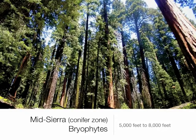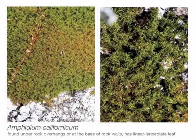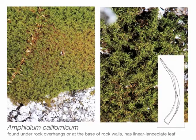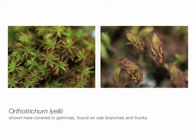Now climbing in elevation to the conifer zone, approximately 5,000 to 8,000 feet. There is no sharp delineation between zones, and this first species is a perfect example as it is also found in the foothills. Amphidium californicum has a very specific microhabitat at the bases of rock walls, with long leaves highly curled when dry — that's called crispate. Then we have Orthotrichum lyellii — you can see reddish dots which are gemmae, vegetative propagules — very common on tree trunks and branches.